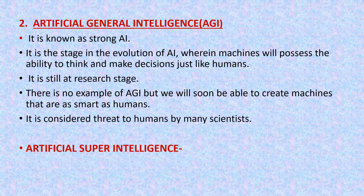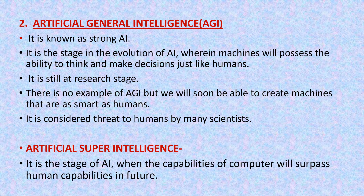The next type of artificial intelligence is artificial super intelligence. It is the stage of AI when the capabilities of computers will surpass human capabilities in future. It is a hypothetical AI and at this stage machines will become self-aware and surpass the capabilities of human intelligence and ability. So it is seen in movies and science fiction books only.